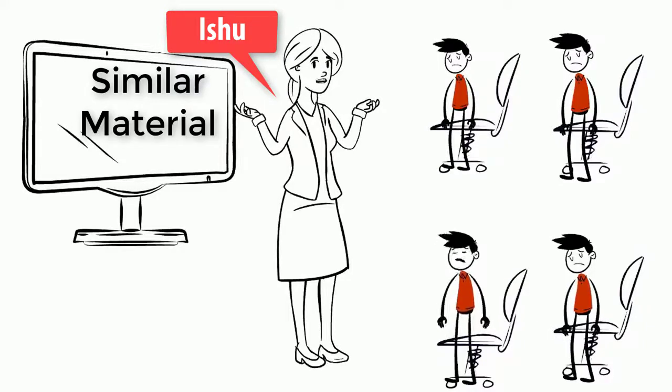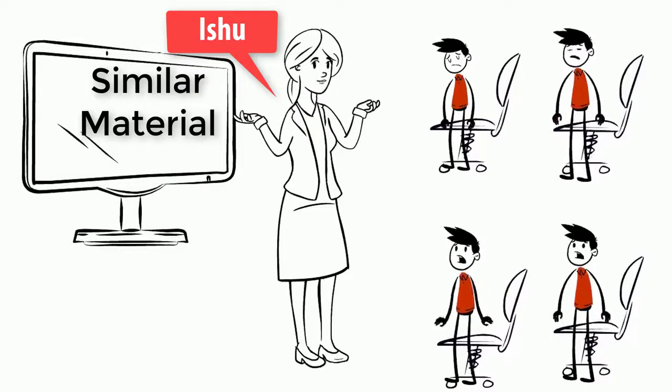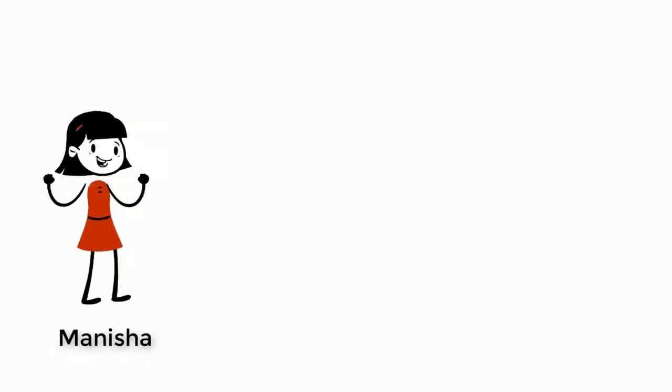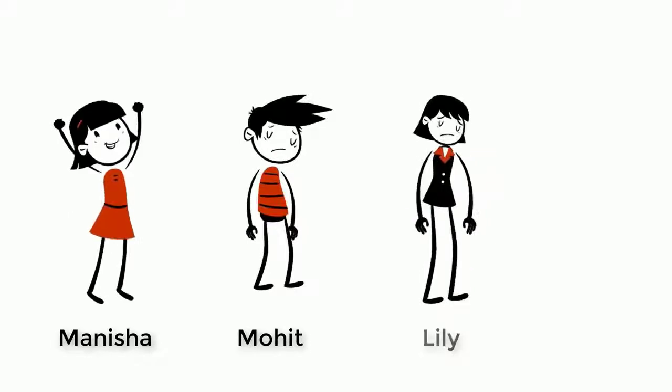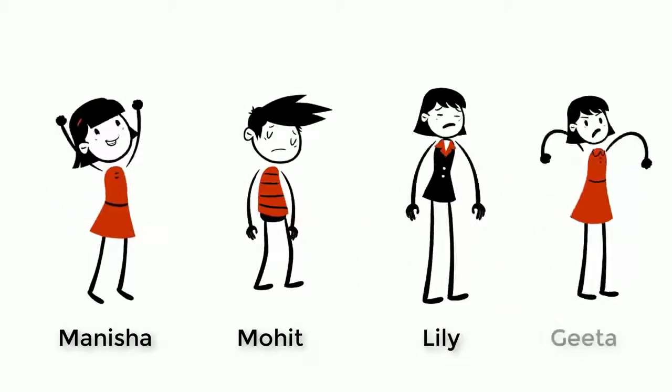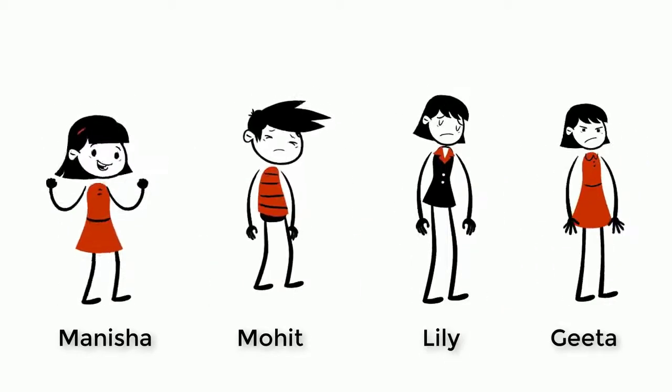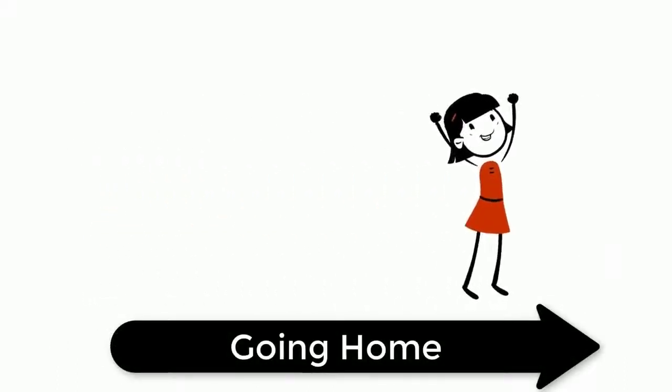But learners responded differently as per their abilities. For example, Manisha understood and noted everything while Mohit was bored, Lili was lost and Gita even did not note what was going on in the class.